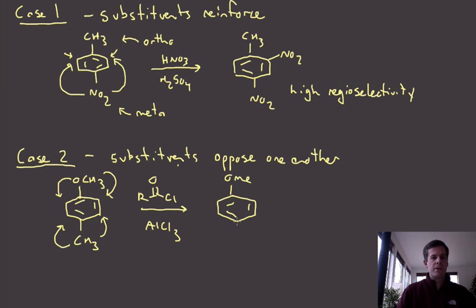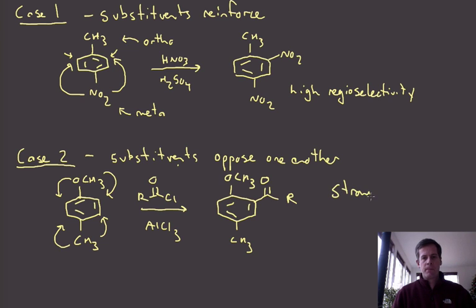So if you remember the reactivity chart that we had in the previous video, an oxygen substituent is a much stronger activating group than a methyl group is, and so the methoxy is going to win in this case, and we're going to see very, very high selectivity for acylation at the ortho position to the methoxy, to the stronger donor. So the stronger donor is the one that's going to win.